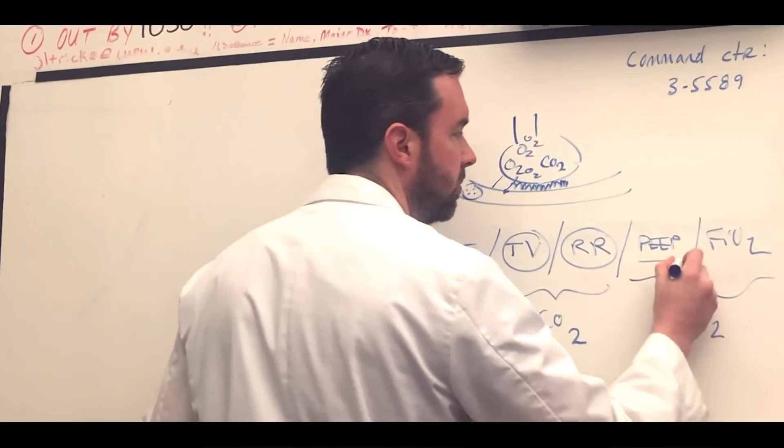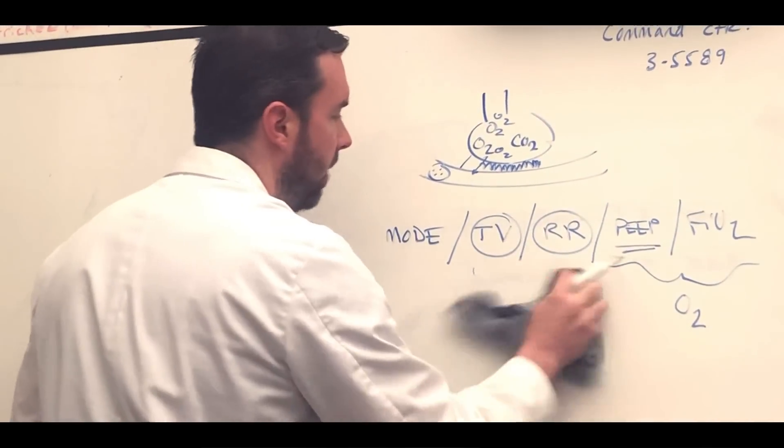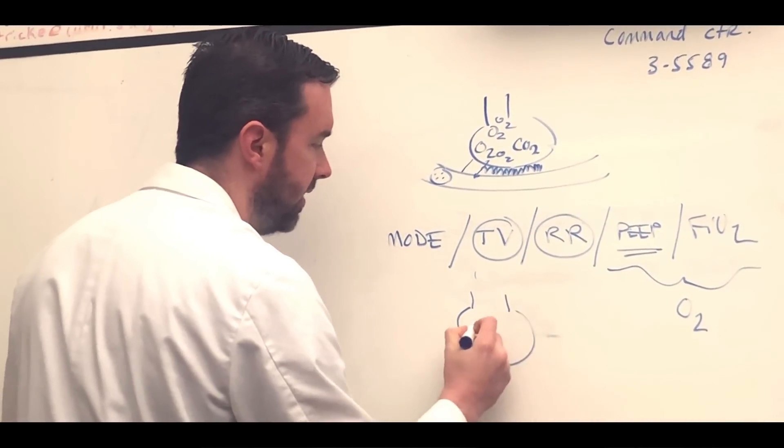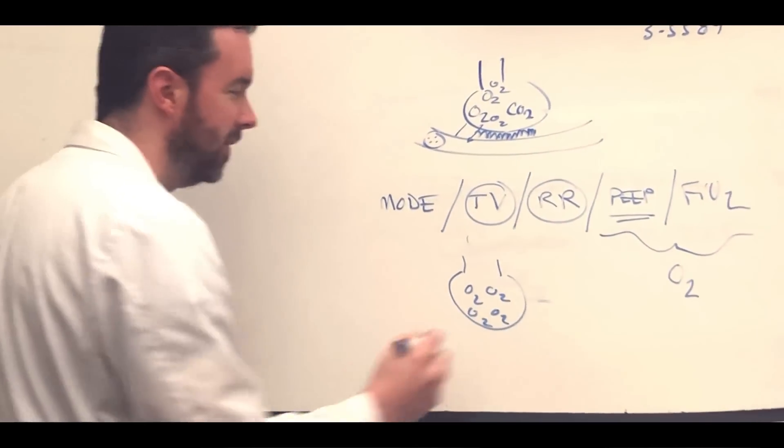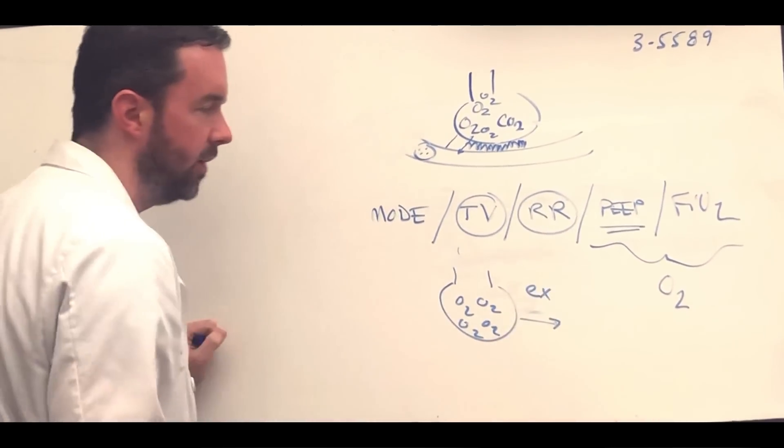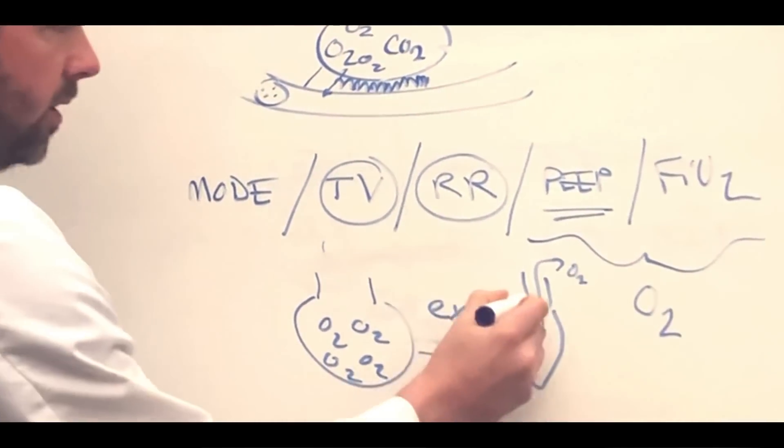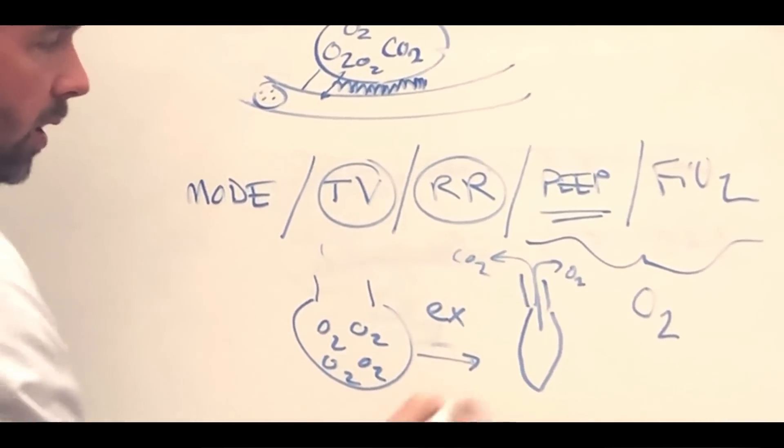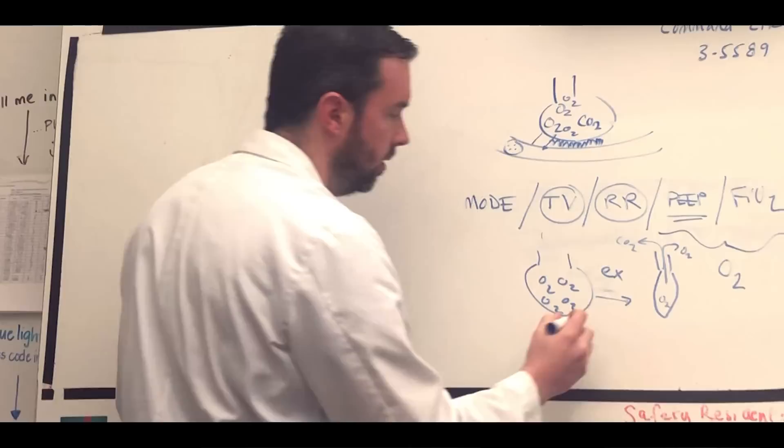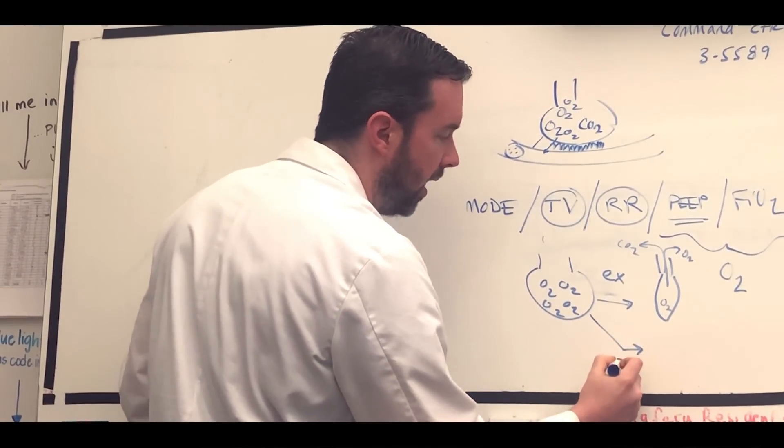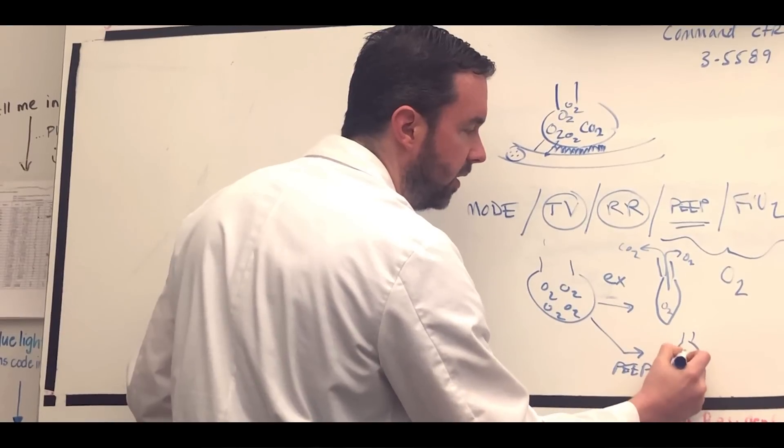PEEP, positive end expiratory pressure. How does that work to improve oxygenation? PEEP works by telling the oxygens that are inside the alveolus to hang out and party a little bit longer. Here's what I mean. As air goes out on exhalation of the alveolus, the alveolus is going to shrink and you're going to lose some oxygen. Obviously carbon dioxide is coming out as well. Typically, not much oxygen is left to diffuse across anymore. By adding PEEP, positive end expiratory pressure, what we do is we splint open that alveolus a little bit more.